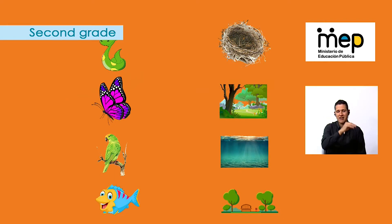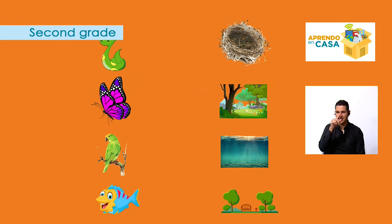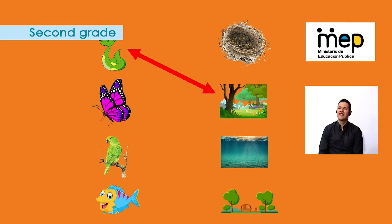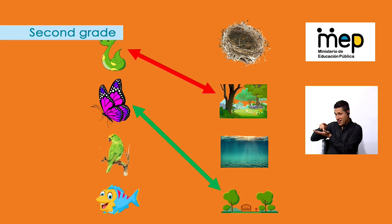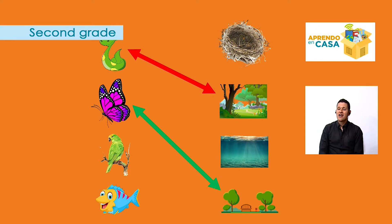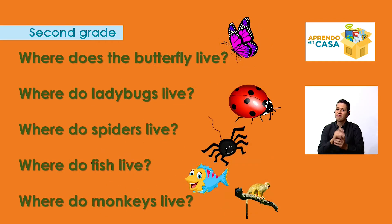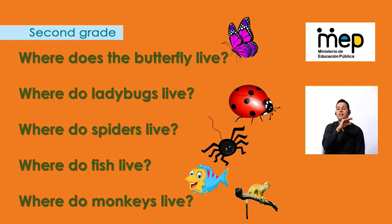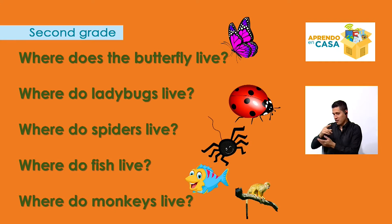And we have another matching activity. Where do snakes live? In the forest. Where does the butterfly live? In the park. Now I have some questions for you, Maria. Where does the butterfly live? The butterfly lives in the park — correct! Where do ladybugs live? Ladybugs live in the garden.